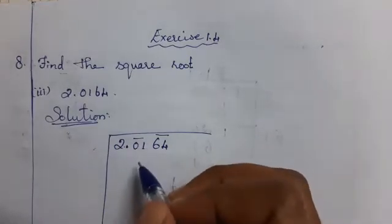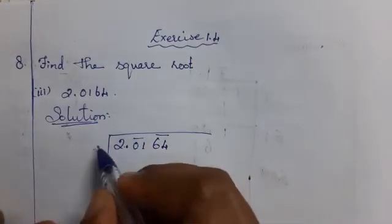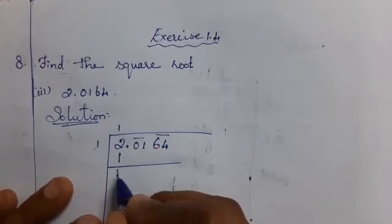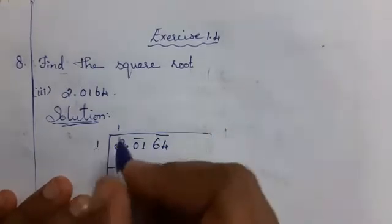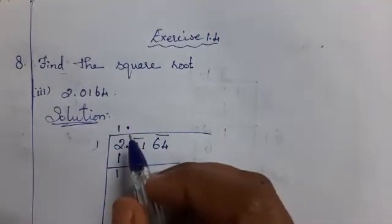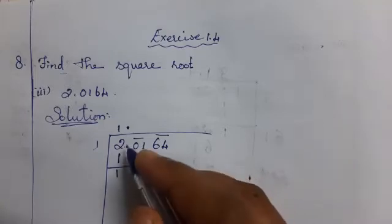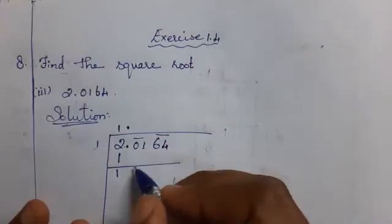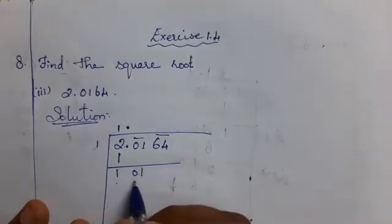Now you have 2. Find the square root of 2 — that means 1, and 1 minus 1. Subtract: 2 minus 1 is 1. Now, after the decimal — before that, you must put the decimal in the quotient place. You can take the next two digits, that is 01. Now you have 101.